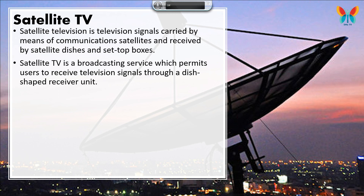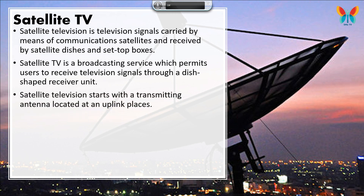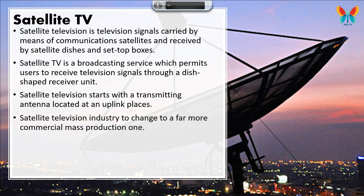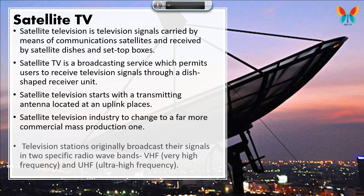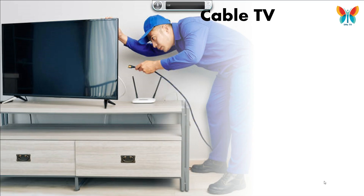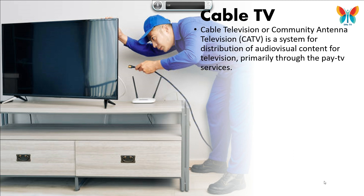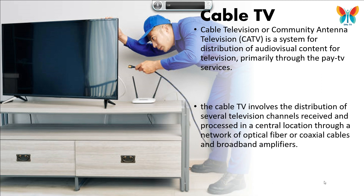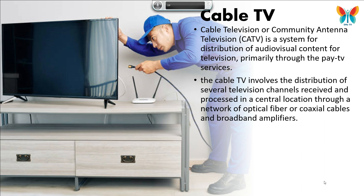Satellite TV. Satellite television carries signals by means of communication satellites, received by satellite dishes and set-top boxes. It is a broadcasting service which permits users to receive television signals through a dish-shaped receiver unit. Satellite television starts with a transmitting antenna located at an uplink facility. Television stations originally broadcast their signals in two specific radio wave bands: VHF (very high frequency) and UHF (ultra-high frequency).